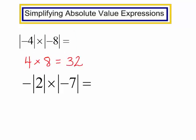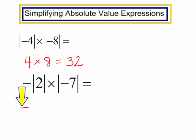Let's try this one: negative the absolute value of 2 times the absolute value of negative 7. This negative sign is not inside the absolute value, so I will bring it down. The absolute value of 2 is just 2, times the absolute value of negative 7, which is 7. So we have negative 2 times 7, which is negative 14.